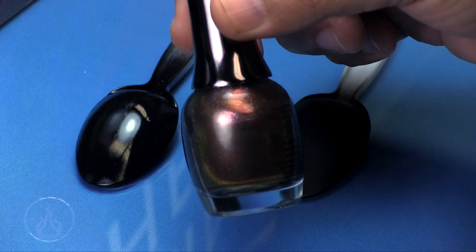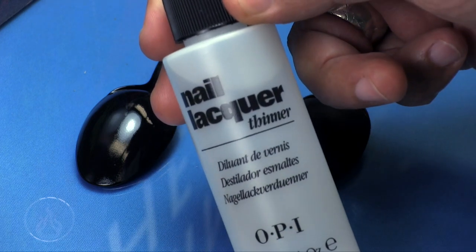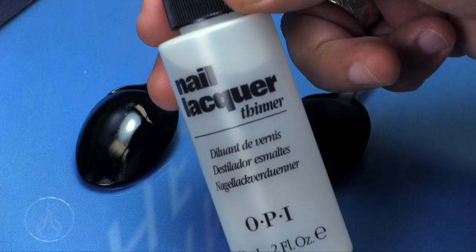We're going to use the same nail polish here. This is a color shift nail polish, so it's got a ton of micro flakes in it and stuff and it gives you a nice metallic effect, but this time we're going to use nail polish thinner.